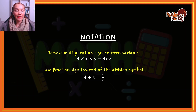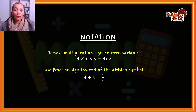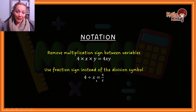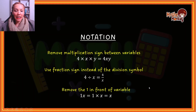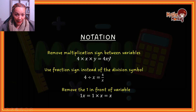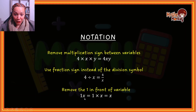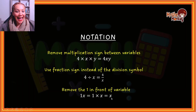In algebra we really move away from using the division sign and move towards using a fraction. So instead of writing four divided by x, in algebra we write it as four over x. Then there's also the rule to remove the one in front of the variable. One x actually just means one times x, and anything multiplied by one remains the same, so you can just write it as x. You do not have to write the one in front of it.